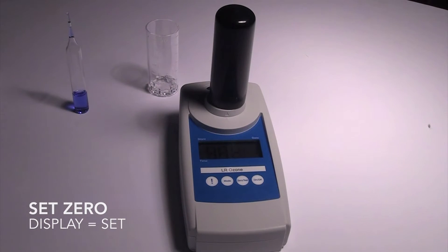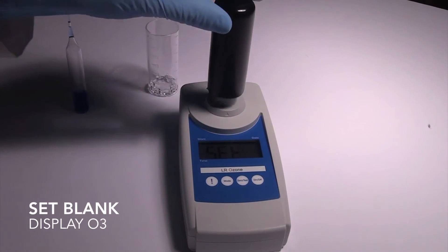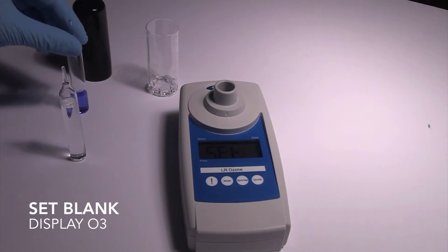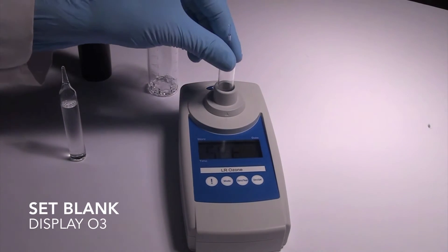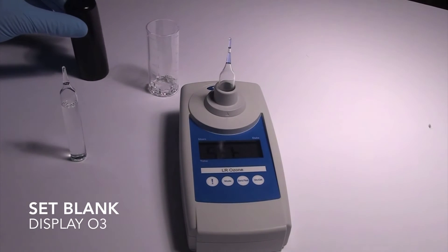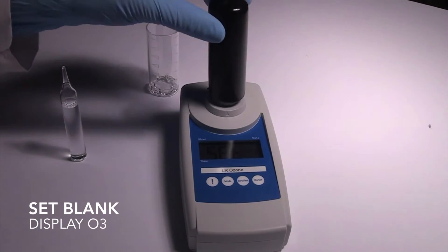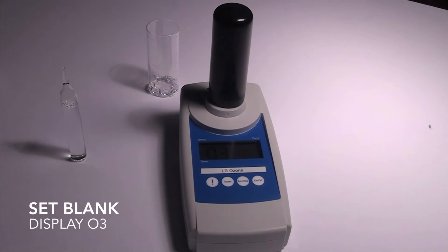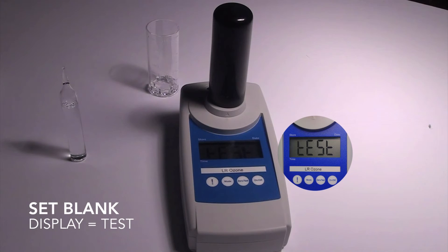Next, generate a reagent blank value. The SAM has now stored a reagent blank value for this ampoule.